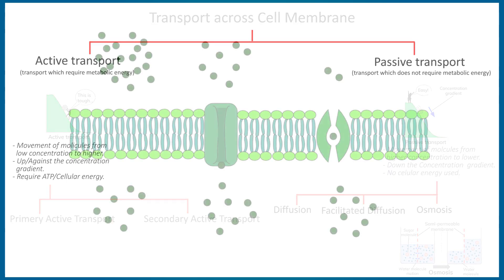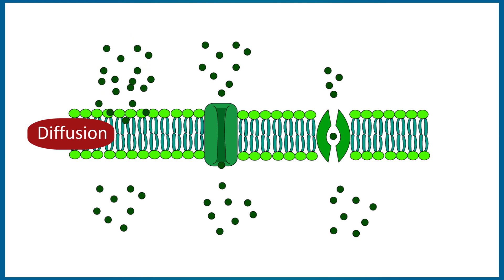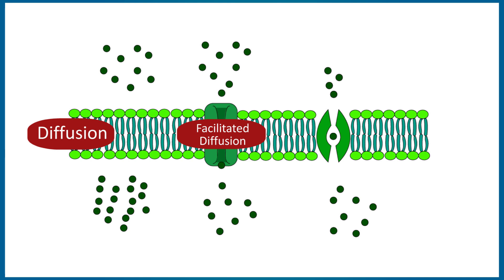Now we are going to discuss the remaining via this animation. On the left side it's an example of simple diffusion. The molecules will move from the top, as the molecules are more concentrated on the top, and they diffuse to the bottom until there is an equal concentration, and this is called simple diffusion.